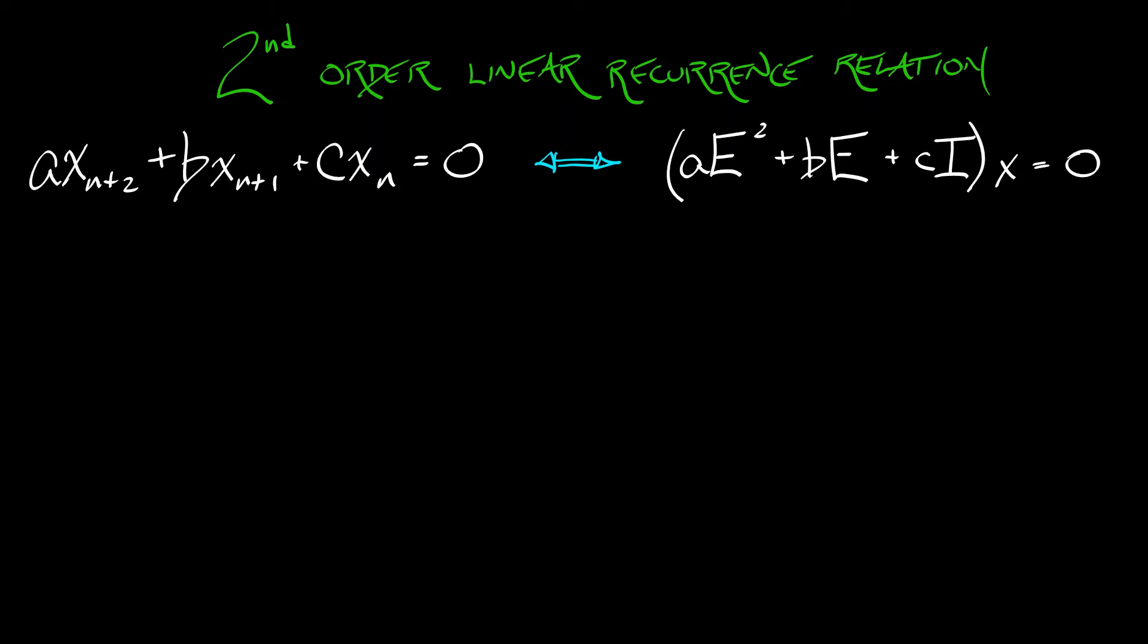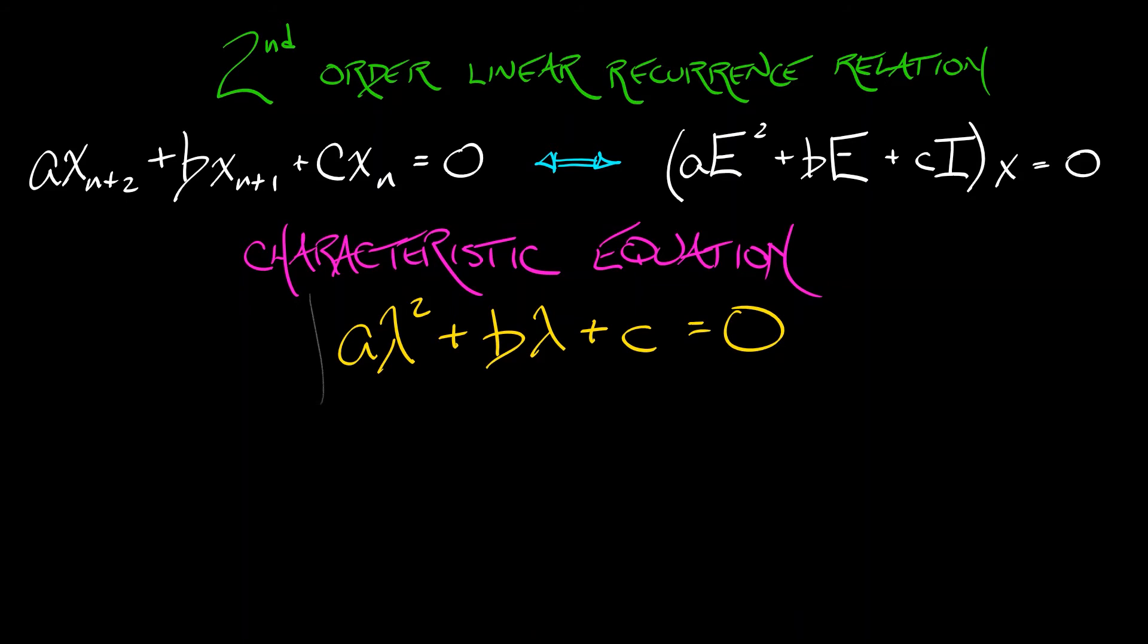Just as with the continuous time case there is a characteristic equation associated with this shift operator. It is of the form aλ² plus bλ plus c equals 0. The general solution to this second order linear recurrence relation is going to be a linear combination of a pair of basis solutions.